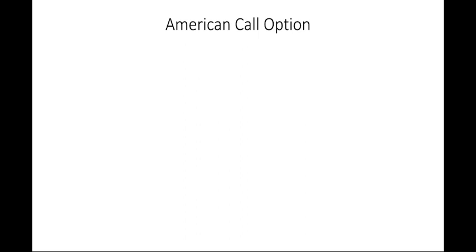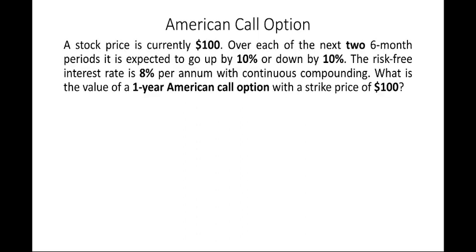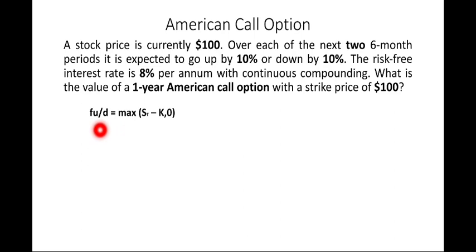In the last session we did the valuation of a European option; the same example is considered here. A stock price is currently $100. Over each of the next two six-month periods, it is expected to go up by 10% or down by 10%. The risk-free interest rate is 8% per annum with continuous compounding. We need to find the value of a one-year call option with a strike price of $100. The value of the option on any future date is maximum of (S_T − K) or zero.